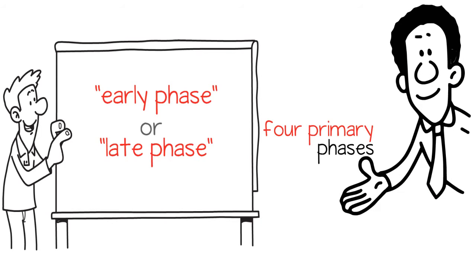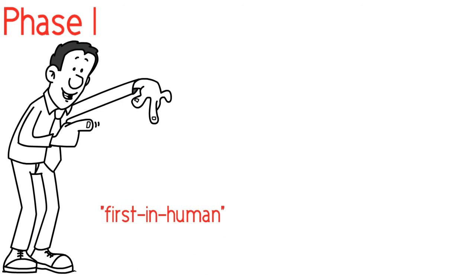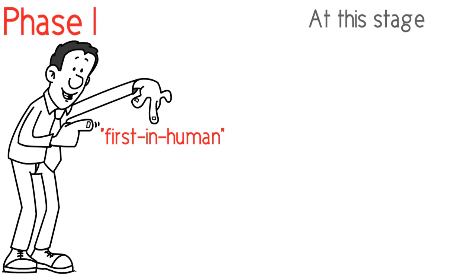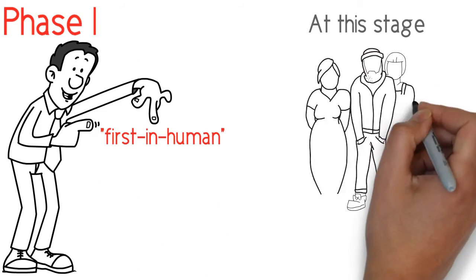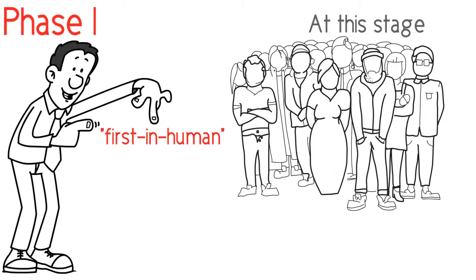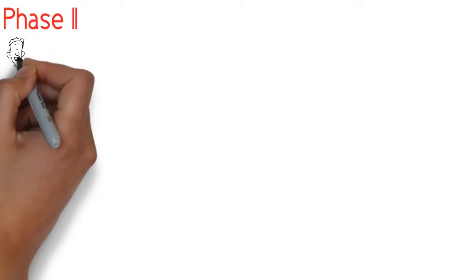Clinical trials are often categorized as early phase or late phase and take place in four primary phases. Phase 1, the first step, is sometimes called a first-in-human clinical trial. At this stage, the drug is tested with healthy volunteers to determine its basic properties and safety.